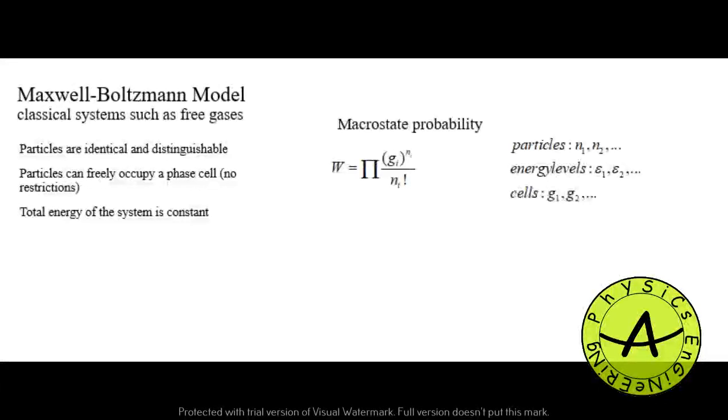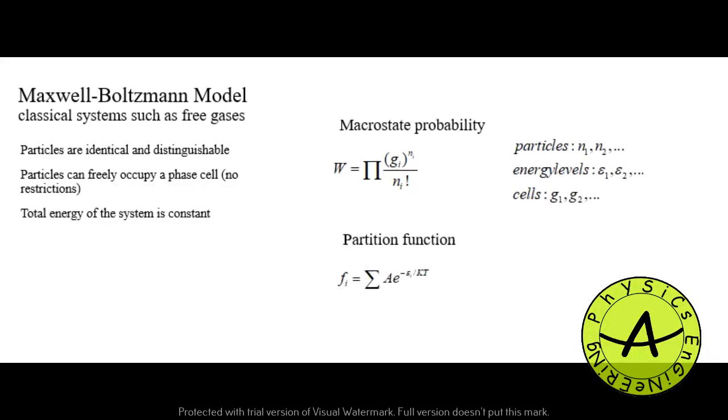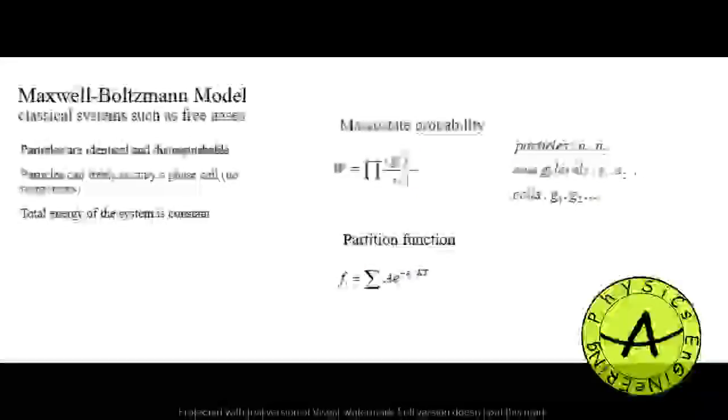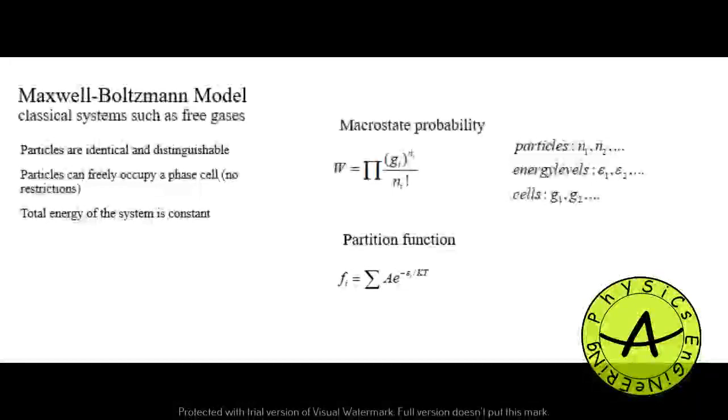This model introduces the macrostate probability as below, where Ni represents particles in different energy levels and G represents the number of cells. This helps us to calculate the partition function for Maxwell-Boltzmann statistics. Partition function describes the statistical properties of systems in thermodynamic equilibrium.